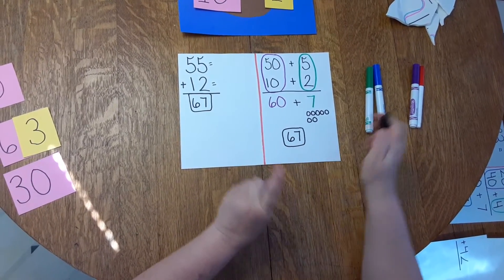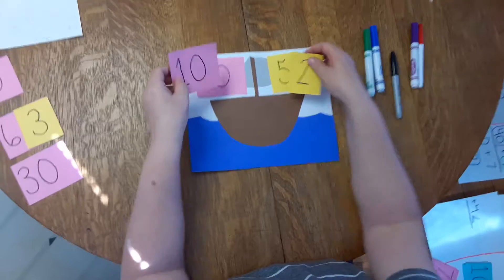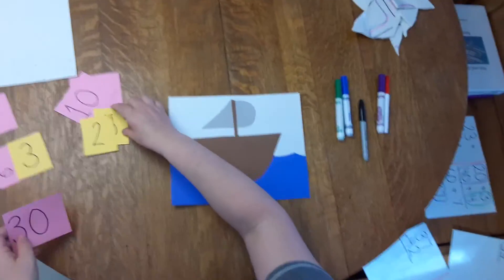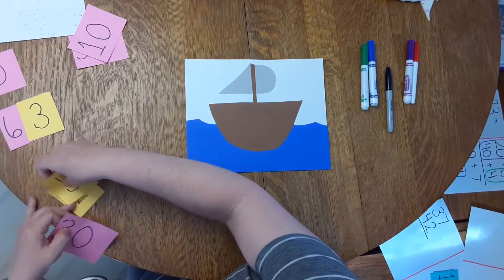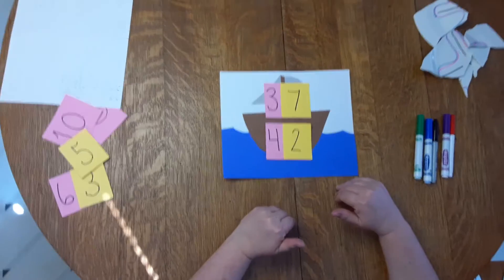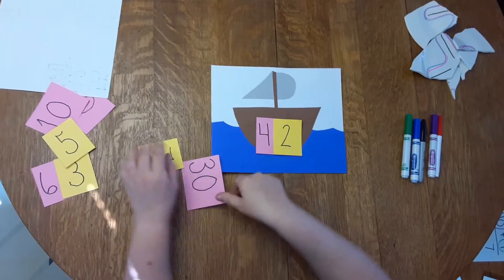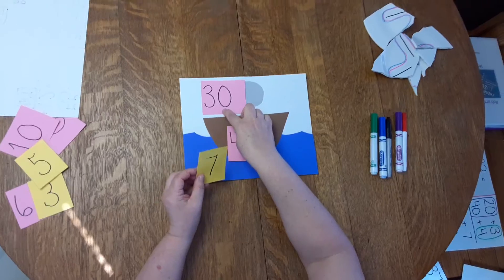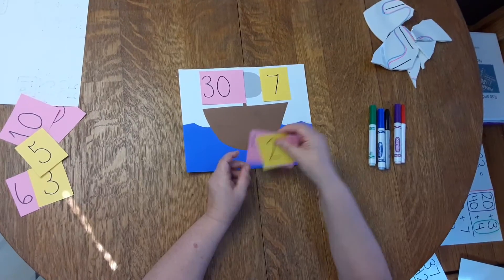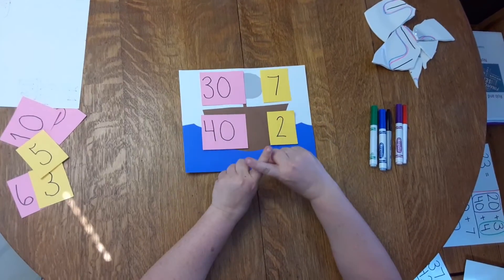I'm going to show it to you one more time. So now I'm going to take 37 and 42. I'm going to try to add them together. If I take 37 and I drop it on our pirate ship deck, we have 30 plus 7. 42, drop it on my pirate ship deck, I have 40 plus 2.